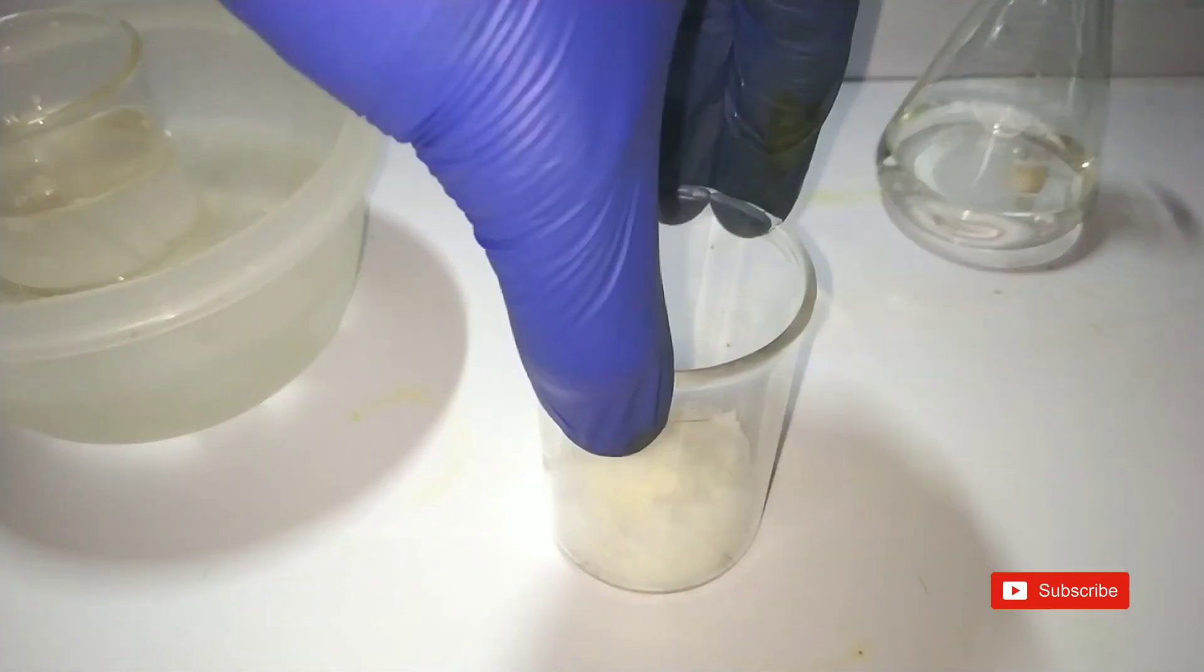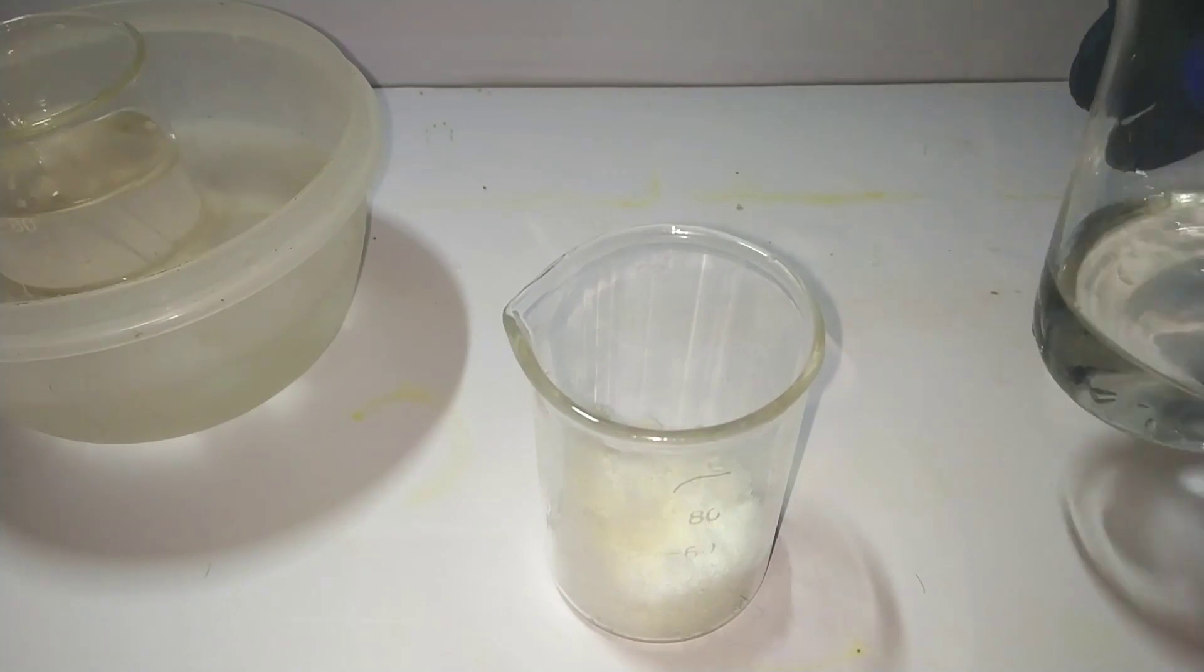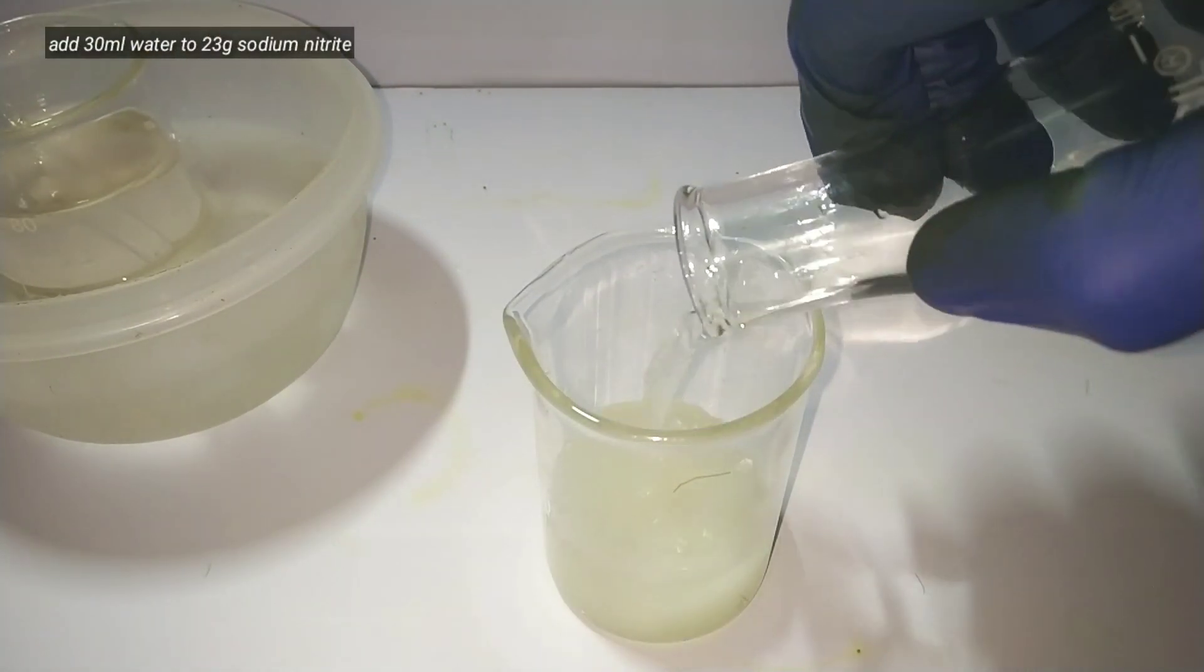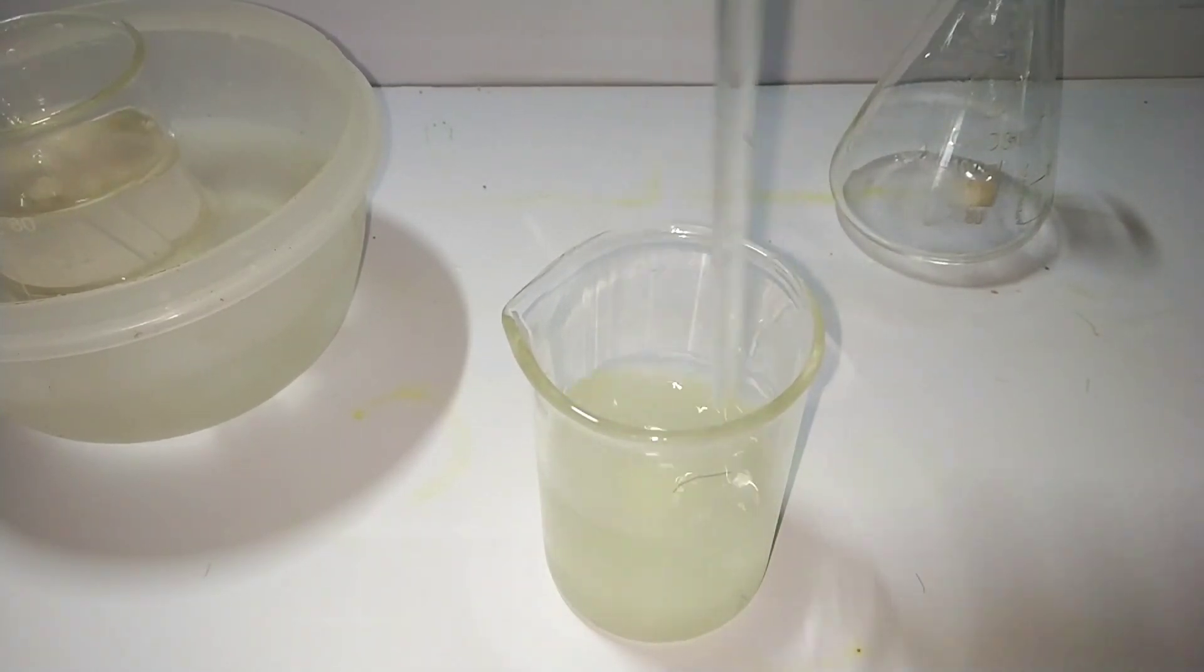We have weighed out 23 grams of sodium nitrite here. Now we add 30 ml of distilled water into that to make a saturated solution. Note that it is sodium nitrite and not nitrate.